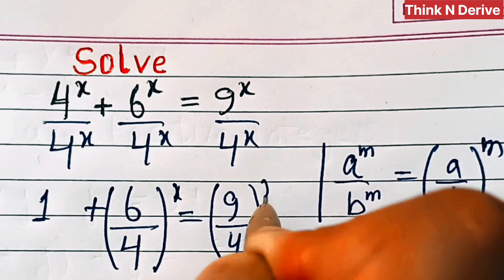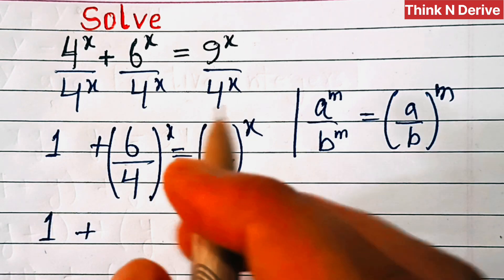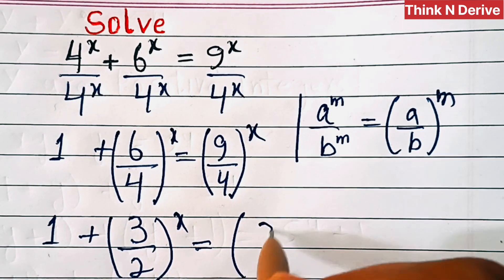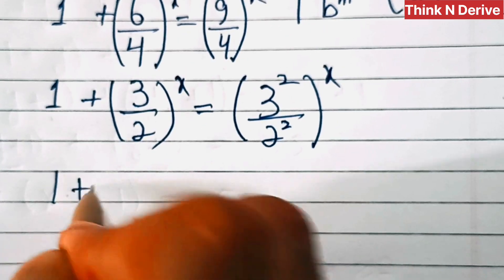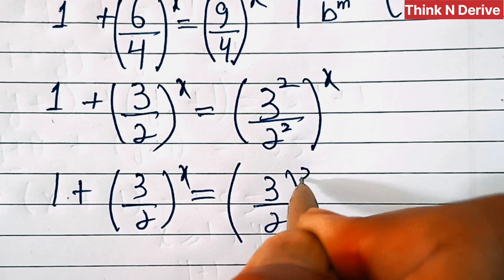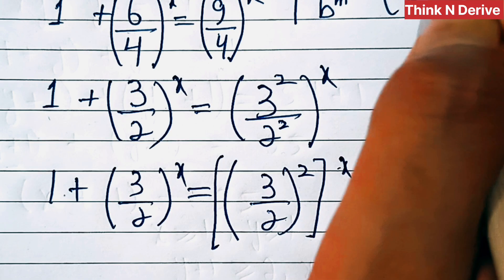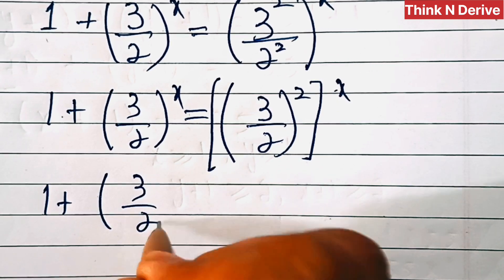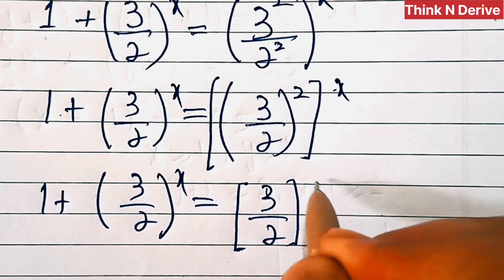Now this is 1 plus 6 by 4, which has 2 as a common factor, so this will give us 3 by 2 whole power x. And 9 over 4 is the same as 3 squared over 2 squared whole power x. So this is 1 plus (3/2)^x equals (3/2)^(2x), applying the same rule a power m over b power m equals a by b whole power m.